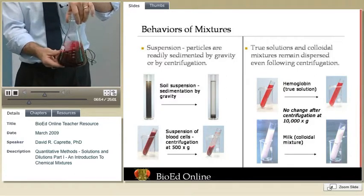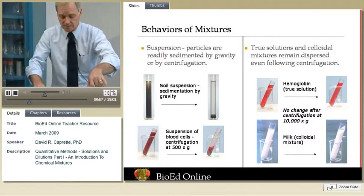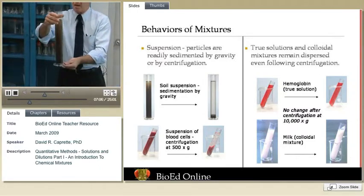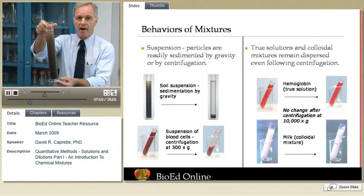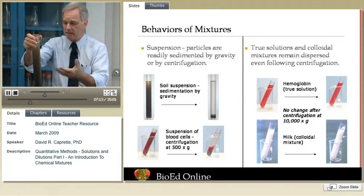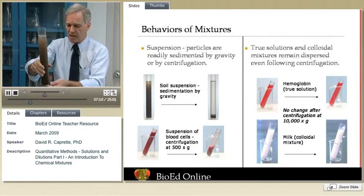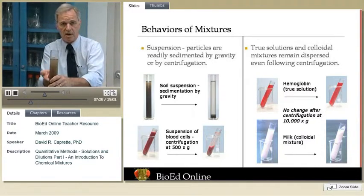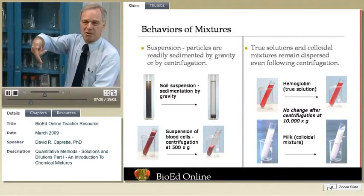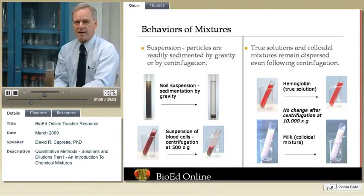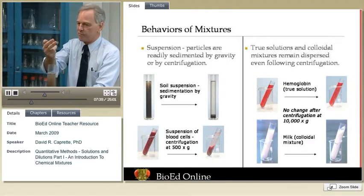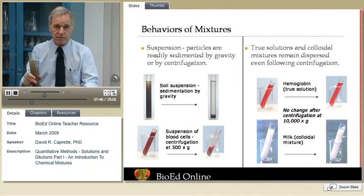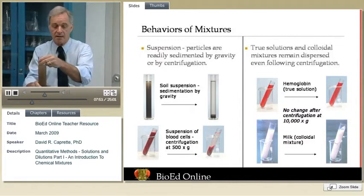Going back to my tall cylinder: a soil suspension settles out pretty quickly just under the force of gravity, because the soil particles — the sand, the clay — are rather large and the force of gravity on those particles is much greater than on the water. Notice that some particles actually float on the surface — gravity pulls water down with greater force than it pulls these plant materials, which are full of air and buoyant. In any event, the minor component can be separated due to gravity or forces beyond gravity.